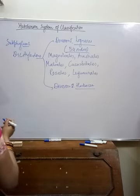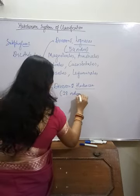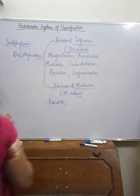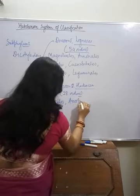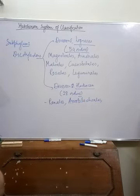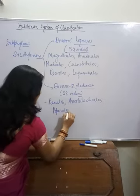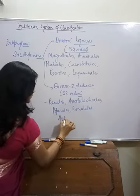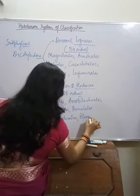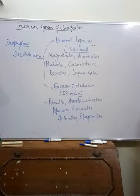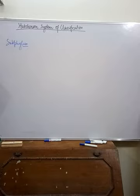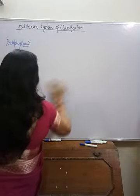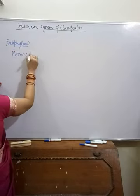Division two, Herbaceae, includes 28 orders. The important orders are Ranales, Aristolochiales, Piperales, Primales, Asterales, and Polygonales.